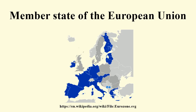The six largest states are also granted an Advocates General in the Court of Justice. Finally, the Governing Council of the European Central Bank includes the governors of the national central banks of each euro area country. The larger states traditionally carry more weight in negotiations.